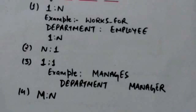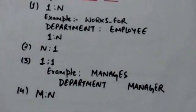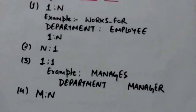Third is 1 to 1. In this case, an entity in A is associated with at most one entity in B, and an entity in B is associated with at most one entity in A.